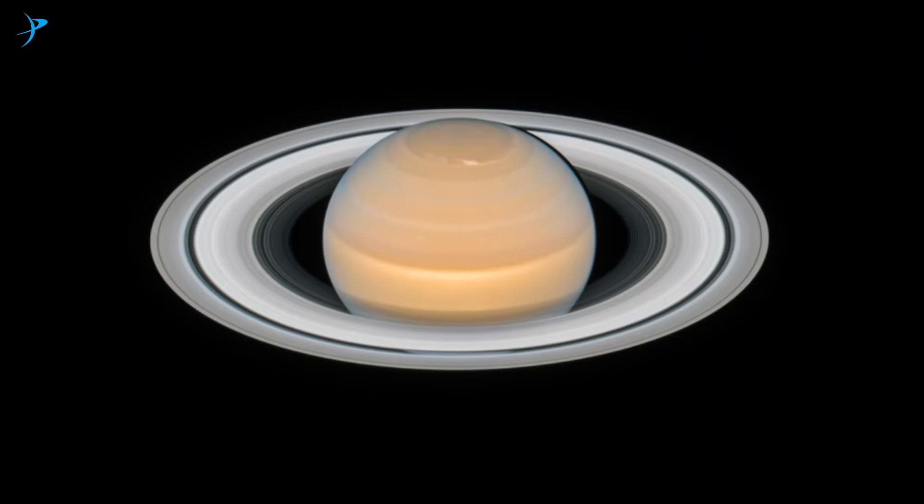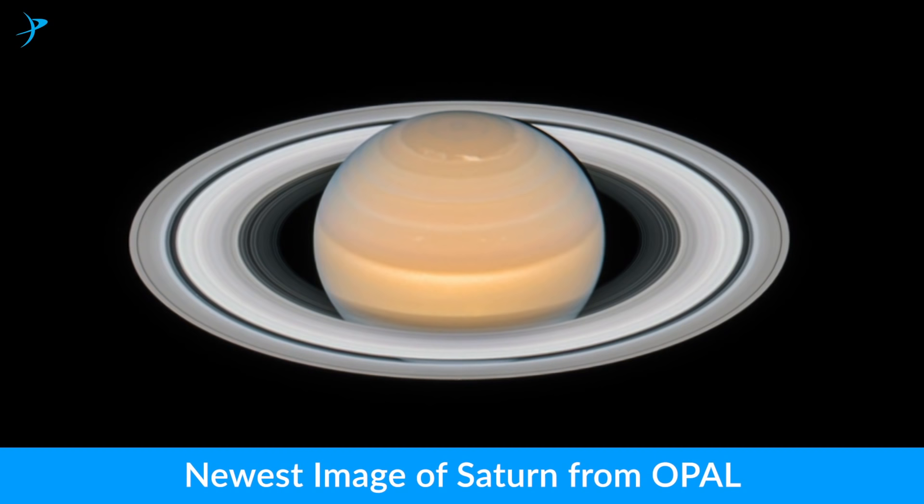Amy, you're the principal investigator of OPAL. What is OPAL? OPAL is a Hubble observing program where we observe each of the outer planets once every single year so that we can monitor them long term. Every single year we'll get a new view, and it turns out these planets look very different every single year.